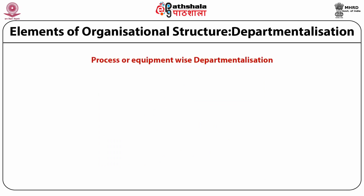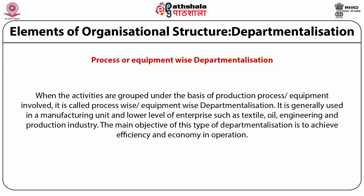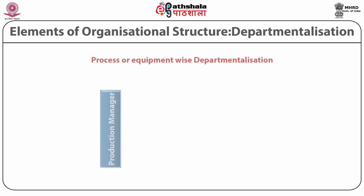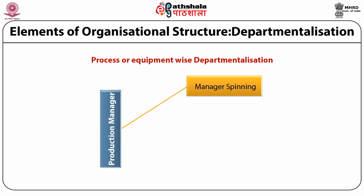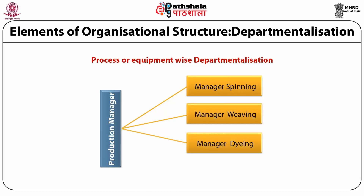Process or equipment-wise departmentalization is when activities are grouped on the basis of production process or equipment involved. This type is most commonly used in manufacturing units and industries such as textile, oil, engineering and production. The main objective is to achieve efficiency and economy in operations. For example, in a textile division, we have a spinning manager, a weaving manager, a dyeing manager and a bleaching manager.